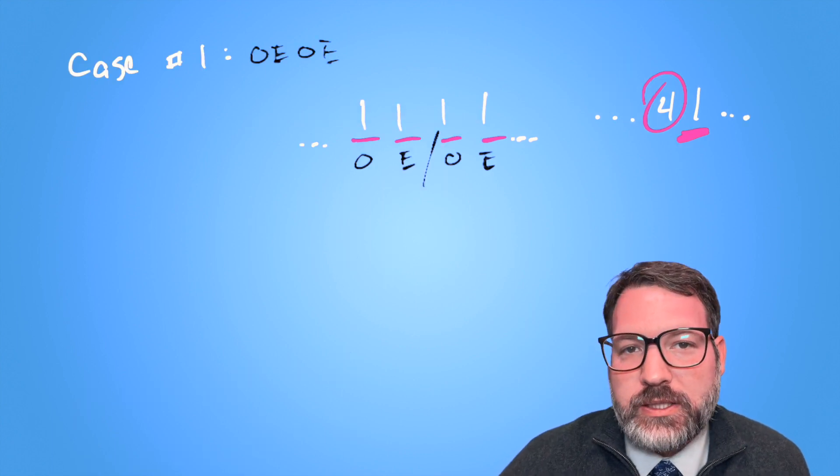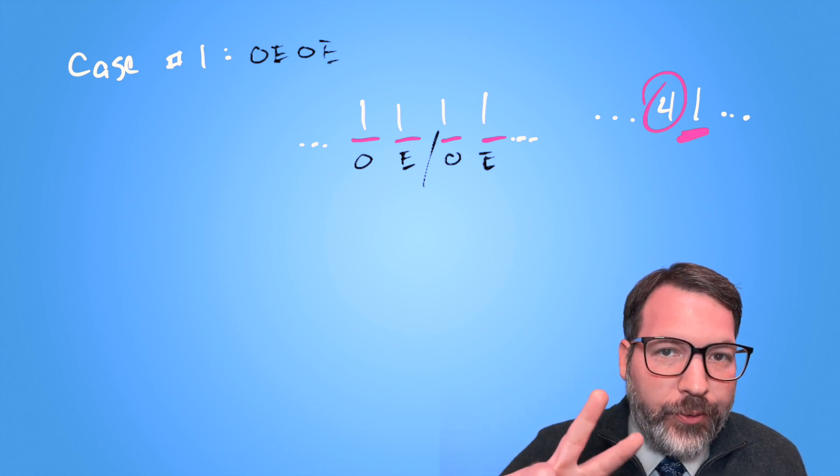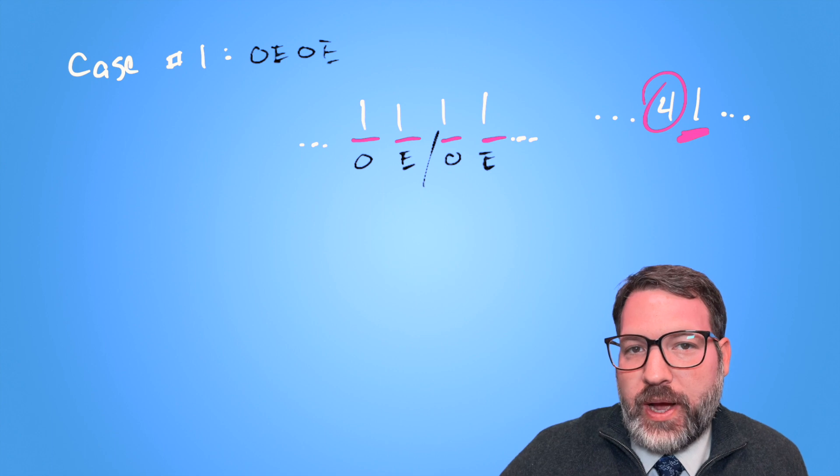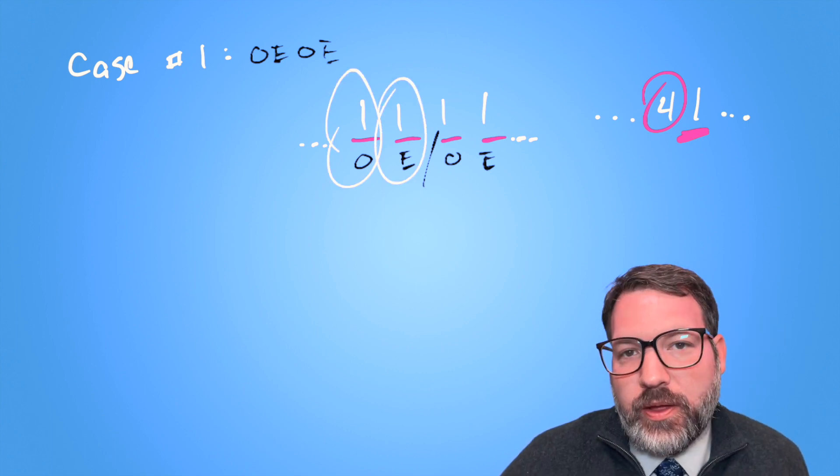So let's call this first thing case number one. How is it possible we would end up with just two pairs, O, E, O, E, with four ones in a row, which is the only place that four could possibly come from? It must be that this one was describing this one.